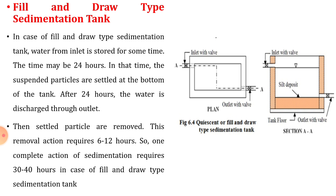In this, 6 to 12 hours are required for the removal of all settled sludge and again 24 hours for the sedimentation, so the entire cycle is of 30 to 40 hours. If fill and draw type sedimentation tanks are provided in the wastewater treatment plant, we have to make an arrangement of 3 to 4 such tanks so that the entire cycle will get continuously operated.